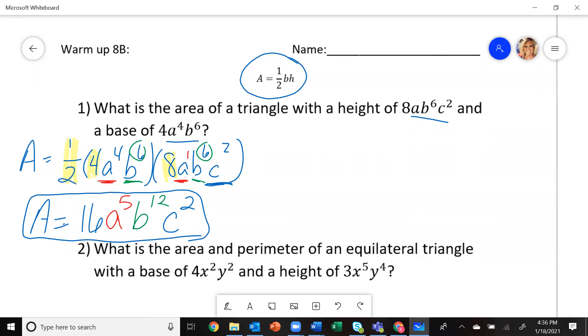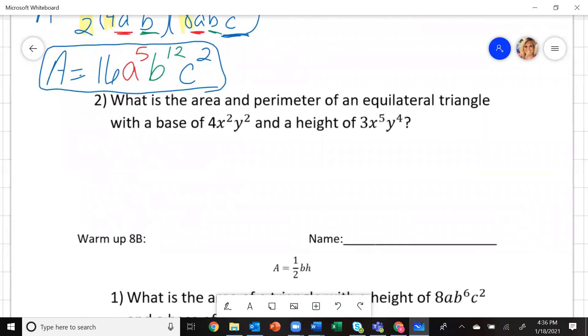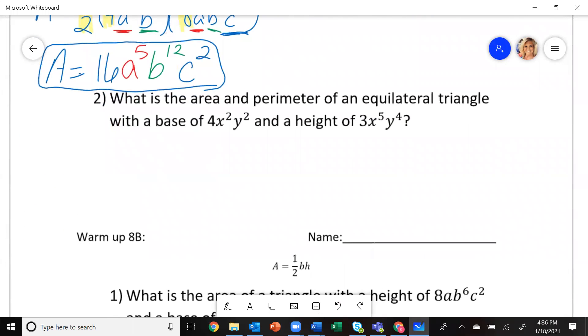Let's look at the next one. This says, what is the area and the perimeter of an equilateral triangle with a base of 4X squared, Y squared, and a height of 3X to the 5th, Y to the 4th? Remember, equilateral triangle means all the sides are equal.